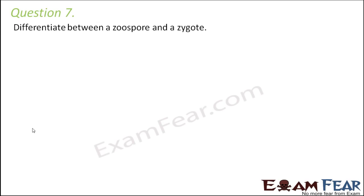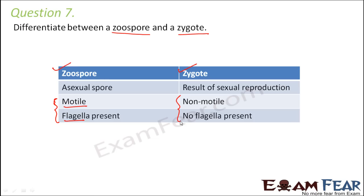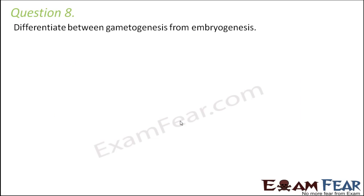Question number seven: differentiate between a zoospore and a zygote. Although the names look similar, they are two different entities. A zoospore is associated with asexual reproduction — it is a type of spore that helps in asexual reproduction. A zygote is the result of sexual reproduction, formed when the male and female gametes fuse during fertilization. Zoospores are motile because they have flagella, whereas the zygote is non-motile — it is simply the fertilized egg with no flagella.